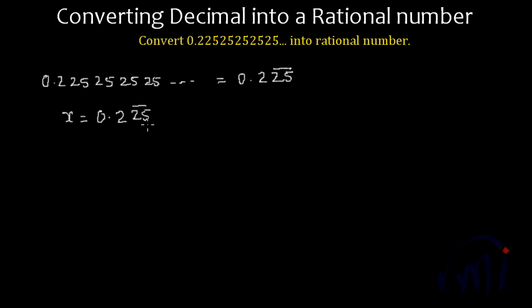First you multiply this number by 1 followed by the number of zeros in such a way that all these non-recurring digits come on the left hand side of the decimal. So since here we have only one digit,